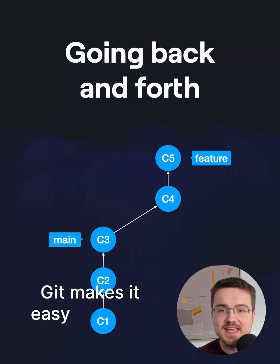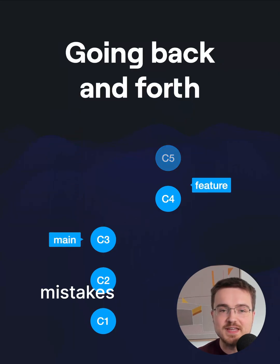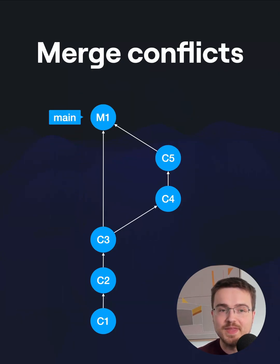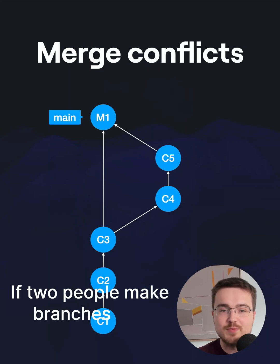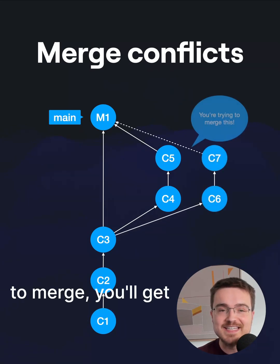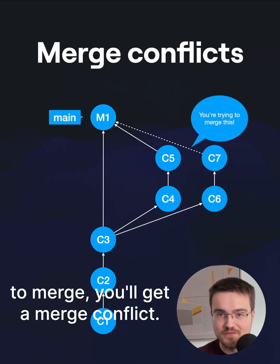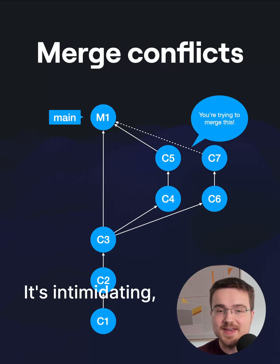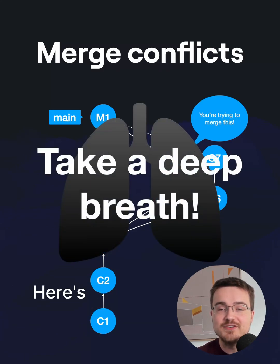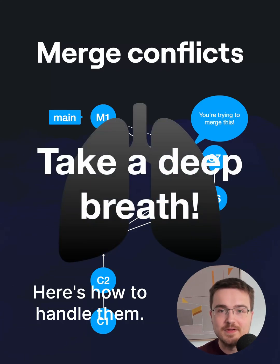Git makes it easy to fix our mistakes by undoing commits. If two people make branches and change the same files and then try to merge, you'll get a merge conflict. It's intimidating, but take a deep breath. Here's how to handle them.